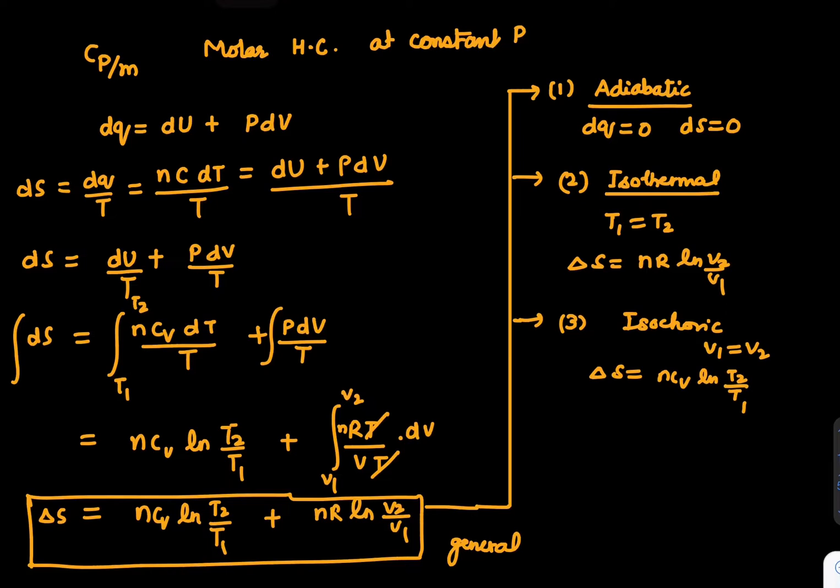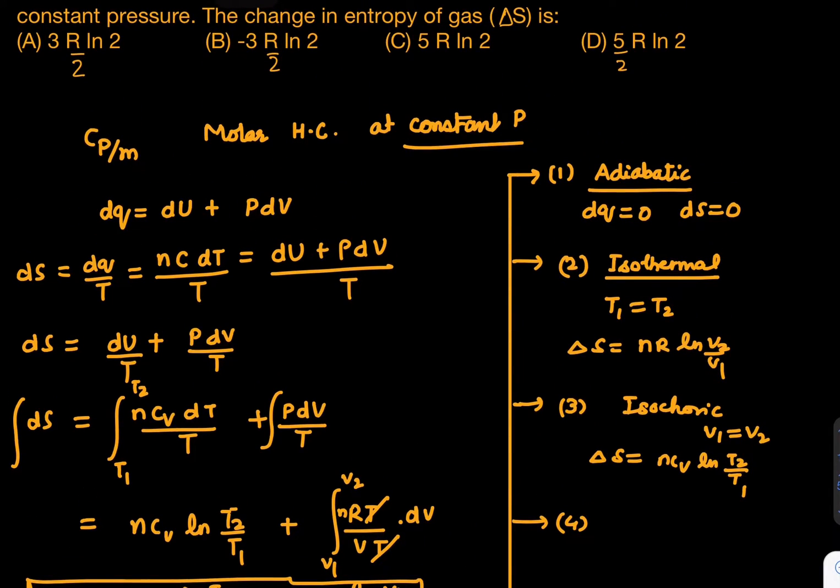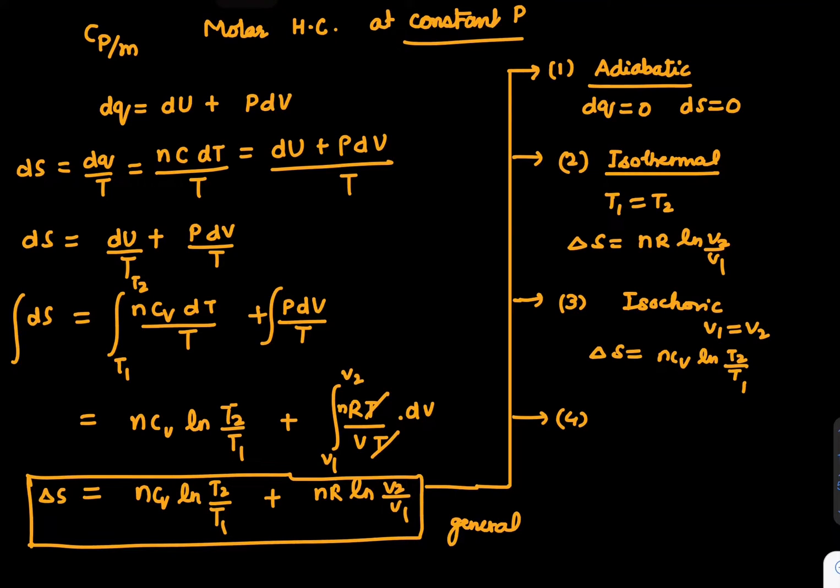Next is the current question—constant pressure. When pressure is constant, we can write ΔS = nCv ln(T2/T1) + nR ln... Now remember, at constant pressure, V is proportional to T. So nR ln(V2/V1) equals nR ln(T2/T1). This is the isobaric case, which is this question.